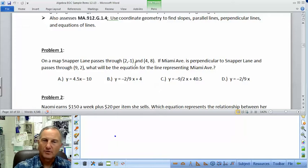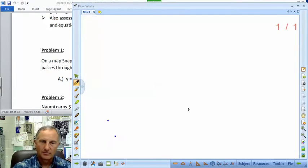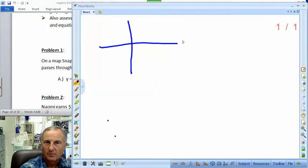On a map, Snapper Lane passes through (2, -1) and (4, 8). If Miami Ave is perpendicular to Snapper Lane and passes through (9, 2), what will be the equation of a line representing Miami Ave? Okay, well, let's come over here. Let's start off with a graph to give us an idea of what we're looking at here.